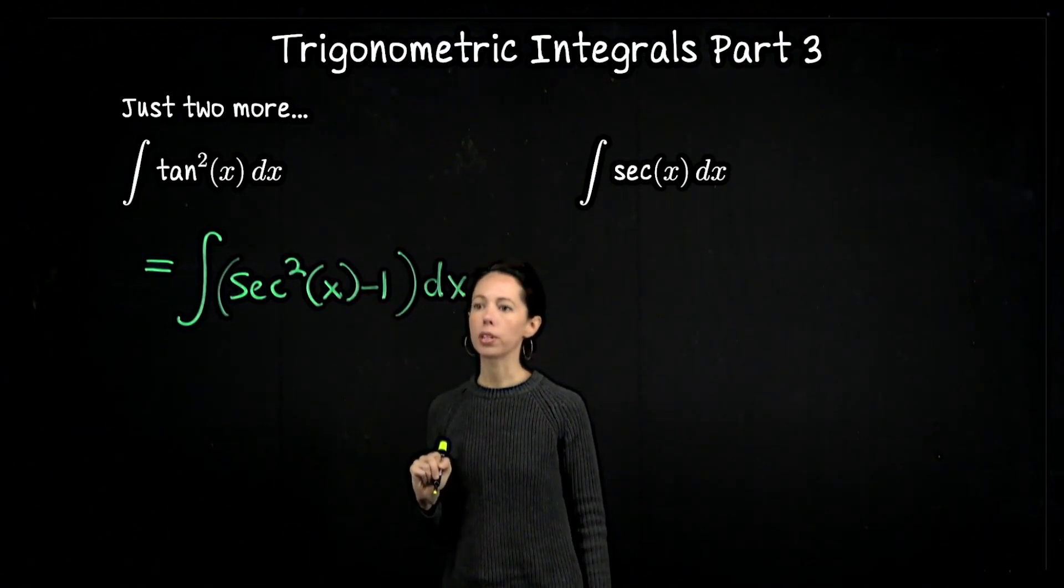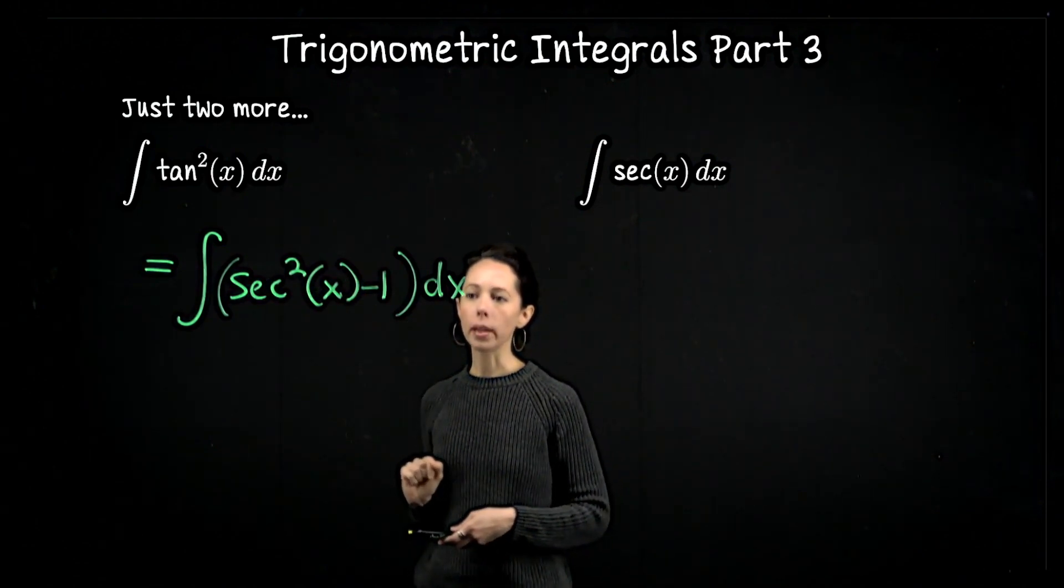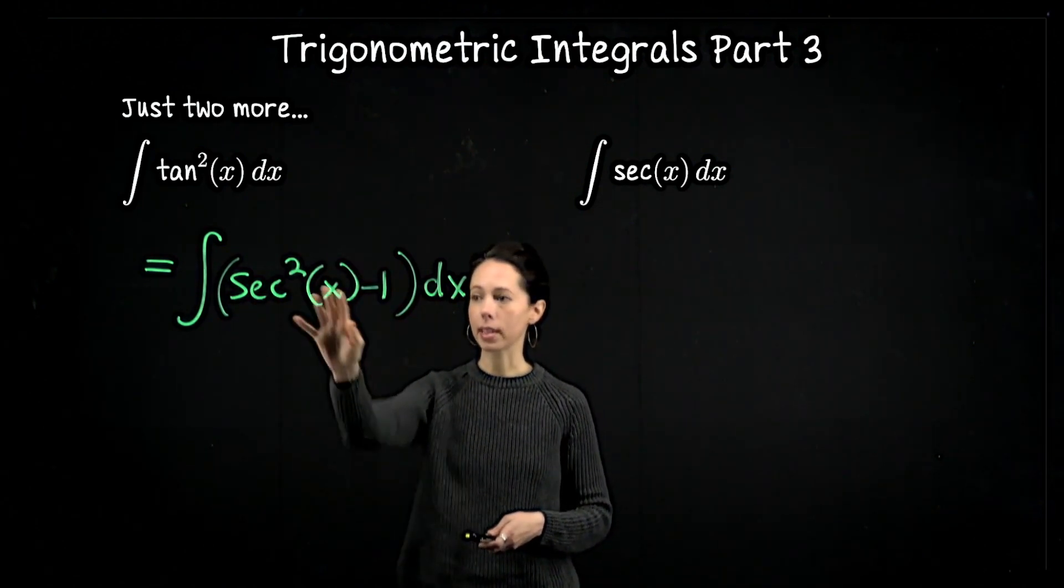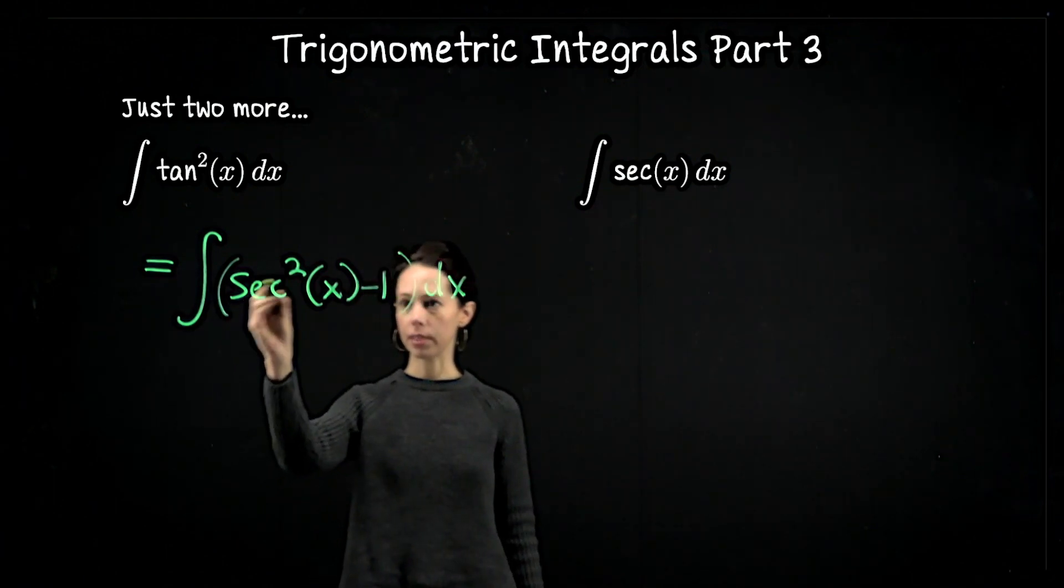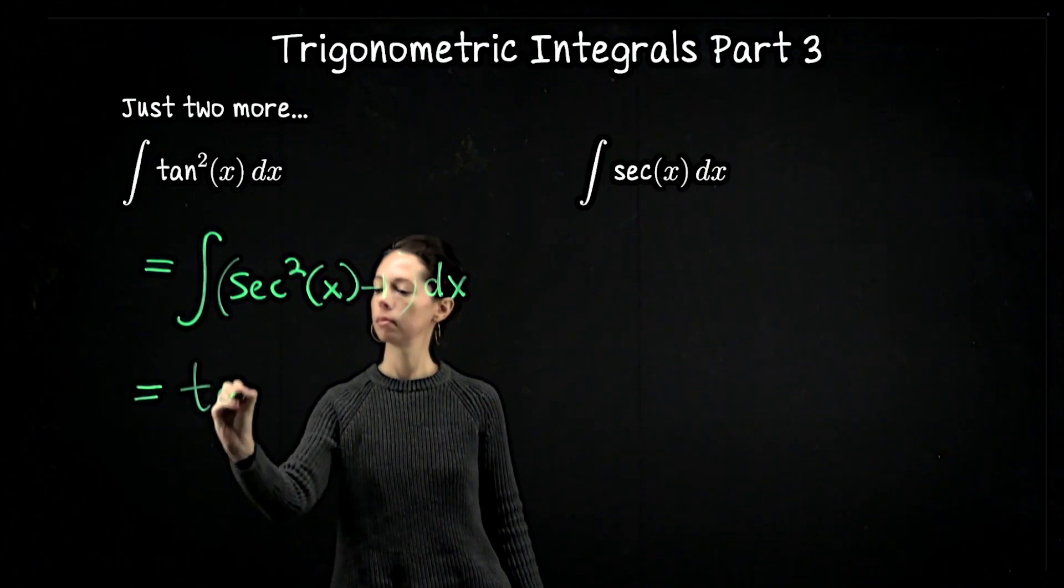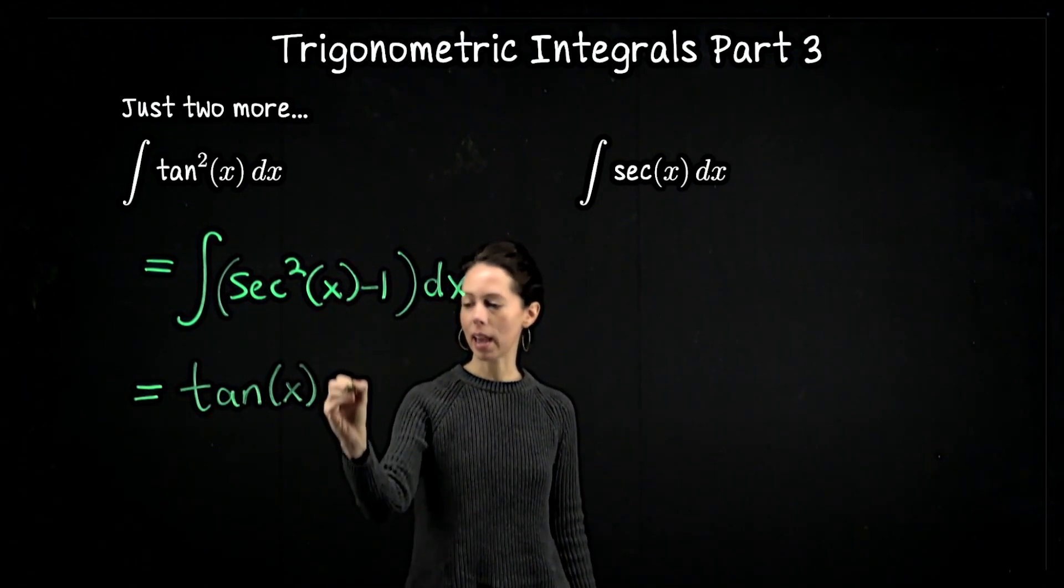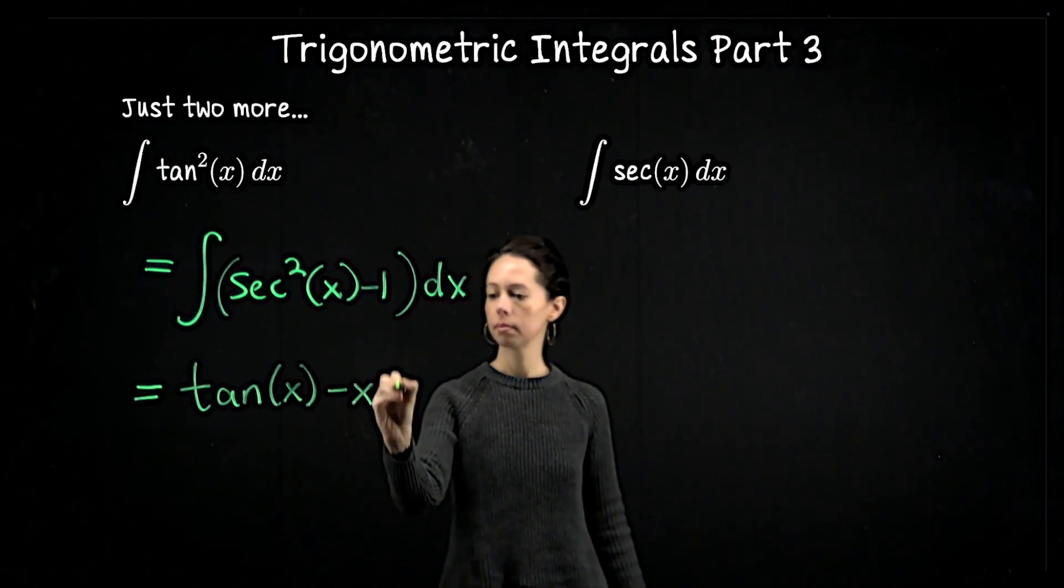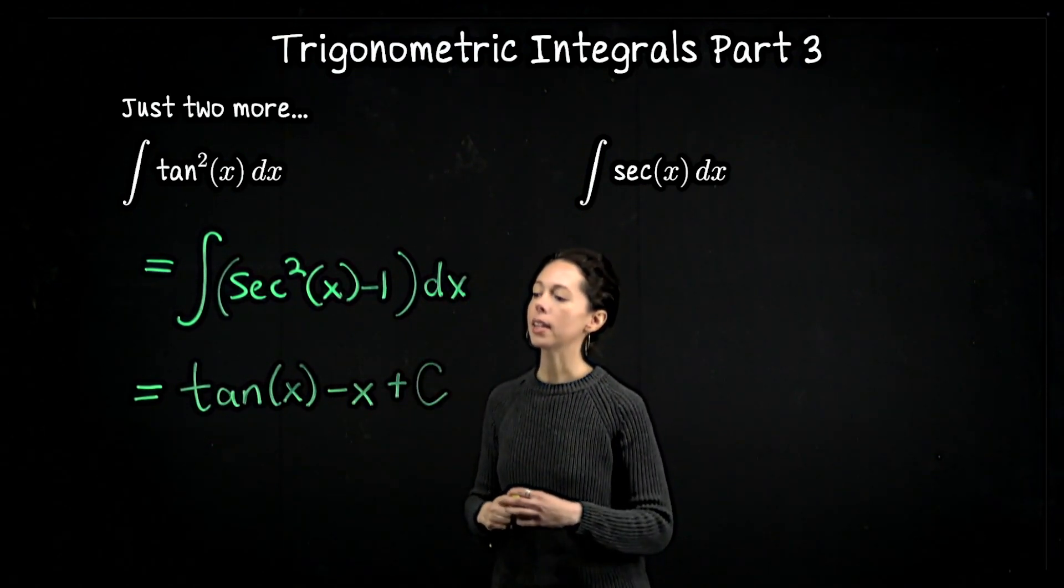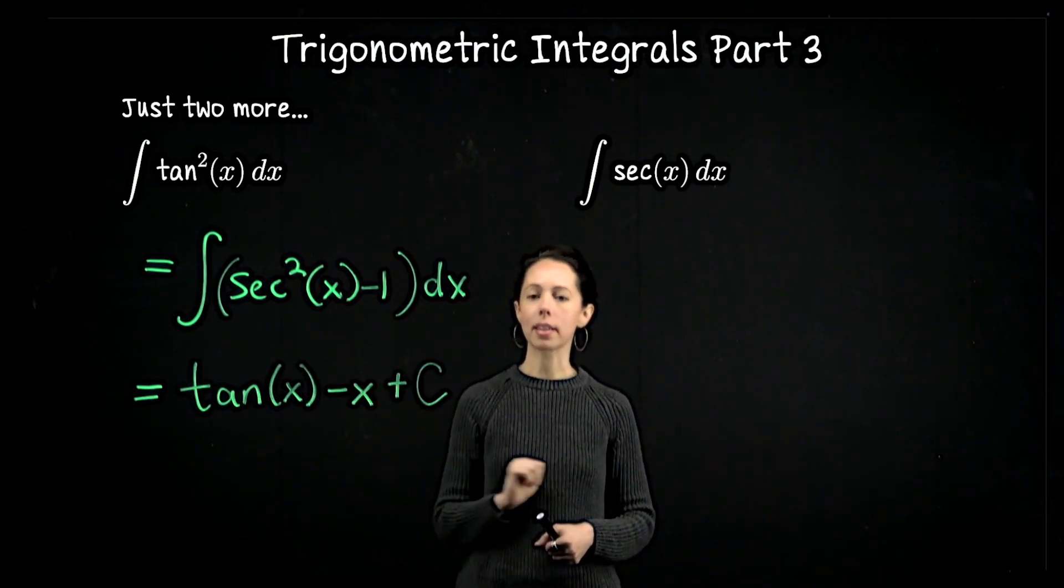I'm going to rewrite that integrand as sec²(x) - 1. Now each of these is ready to anti-differentiate because the antiderivative of sec²(x) is tan(x), and the antiderivative of 1 is x. So the antiderivative of tan²(x) is tan(x) - x + C.